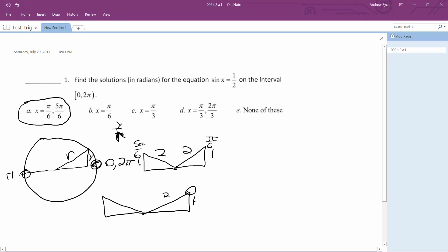And then of course, the other solution is 5 pi over 6, so 1 over 2. All right, the answer is A, pi over 6 and 5 pi over 6. There you go.